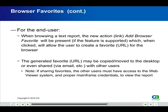For the end user, when browsing a text report, the new action link Add Browser Favorite will be present if the feature is supported, which, when clicked, will allow the user to create a favorite URL for the browser. The generated favorite URL may be copied, moved to the desktop, or even shared via email with other users. Note: if sharing favorites, the other users must have access to the web viewer system and proper mainframe credentials to view the report.